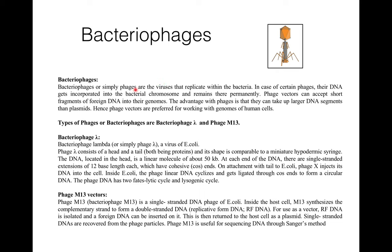Bacteriophages, or simply phages, are viruses that replicate within bacteria. In certain phages, their DNA gets incorporated into the bacterial chromosome and remains there permanently. Phage vectors can accept short fragments of foreign DNA into their genomes. The advantage with phages is that they can take up larger DNA segments than plasmids; hence, phage vectors are preferred for working with the genome of human cells.